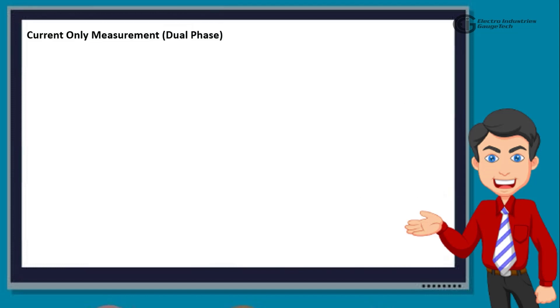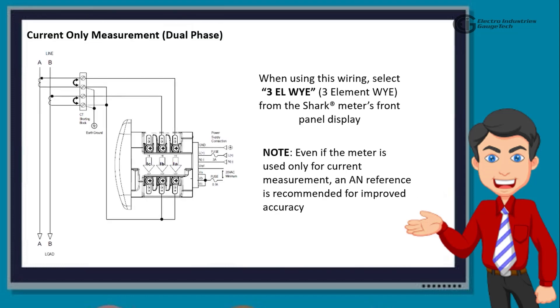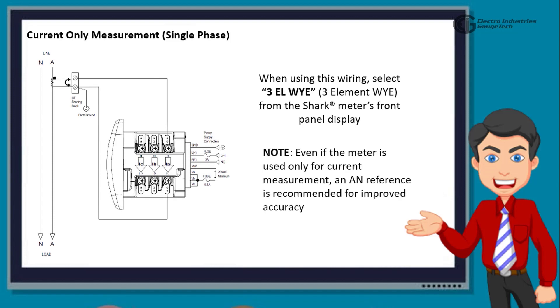Similarly, another diagram shows the wiring for current-only measurement, dual phase. In addition, the third diagram also shows the wiring of Shark 250 meter for current-only measurement, single phase.